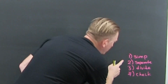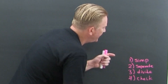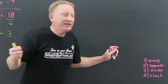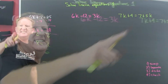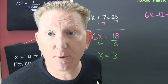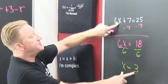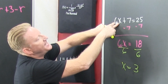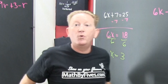Simplify, separate, divide, check it. That fourth step — get it in there. You've got to check and see if that answer works out. You take that 3 and you put it right back in there. 3 times 6 is 18, plus 7 is 25. We've covered that.